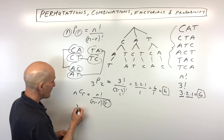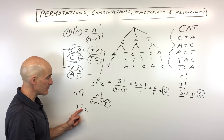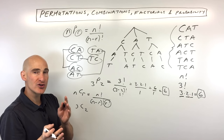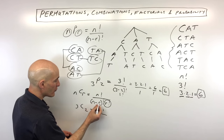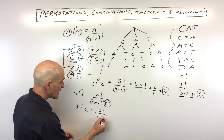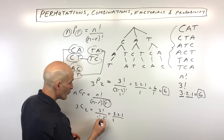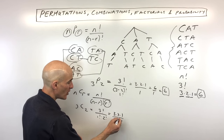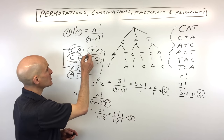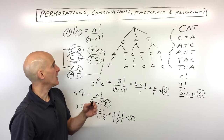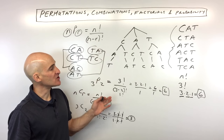In this example with C-A-T choosing two, that's three factorial over (three minus two) factorial times two factorial. Expanding: three times two times one over one times two times one. The two and one cancel, leaving three divided by one equals three. That matches the three distinct groups we found — so that's the core idea between permutations and combinations.